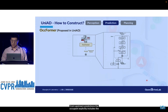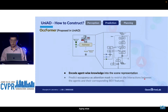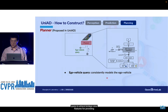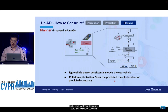The OccuFormer explicitly encodes agent-wise knowledge into scene representation. Furthermore, it predicts occupancy as an attention mask to restrict interactions between agents and their corresponding bird's-eye view features. At the end, the planner uses the ego vehicle query to attend to bird's-eye view features for predicting future waypoints, then adjusts the path to avoid potential collisions based on the predicted occupancy.